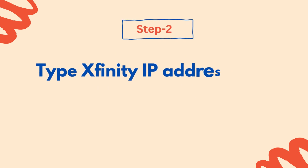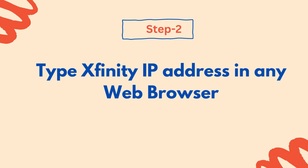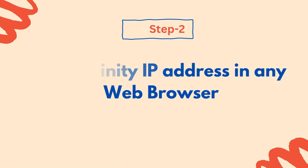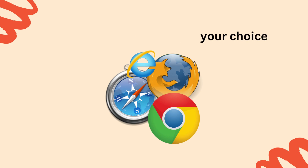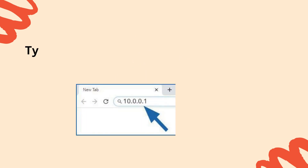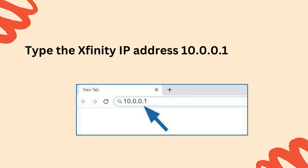Step 2: Type the Xfinity IP address in any web browser. Open any web browser of your choice and type the Xfinity IP address 10.0.0.1 in the URL bar.